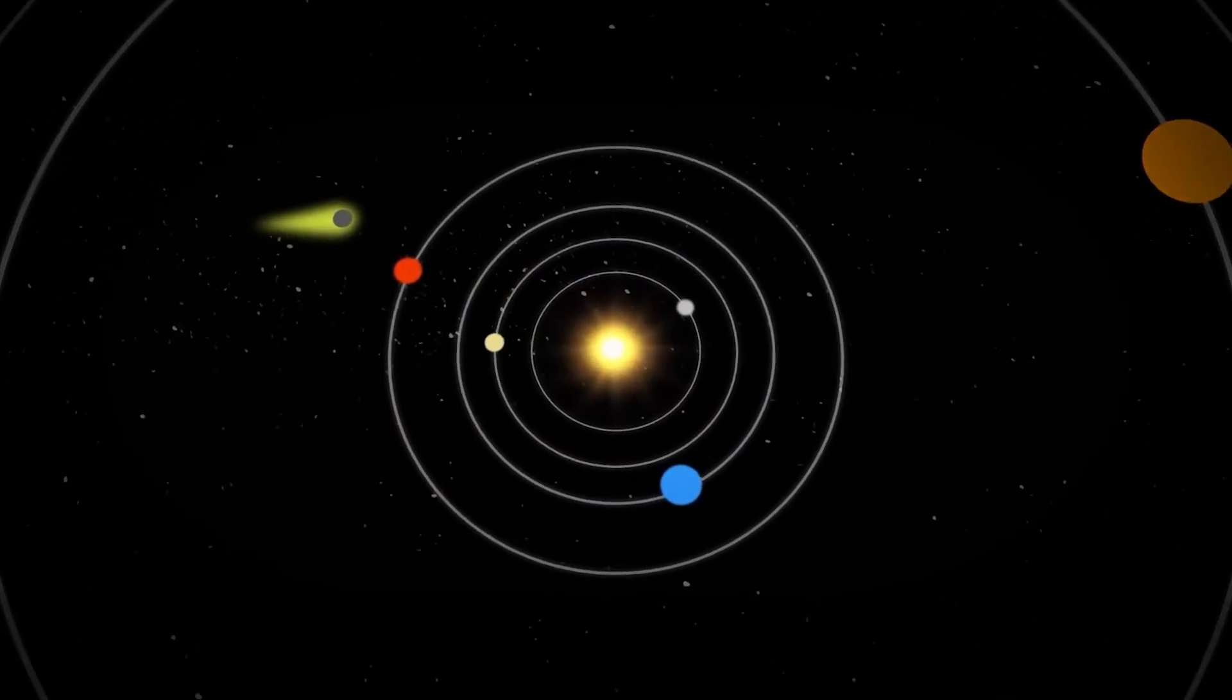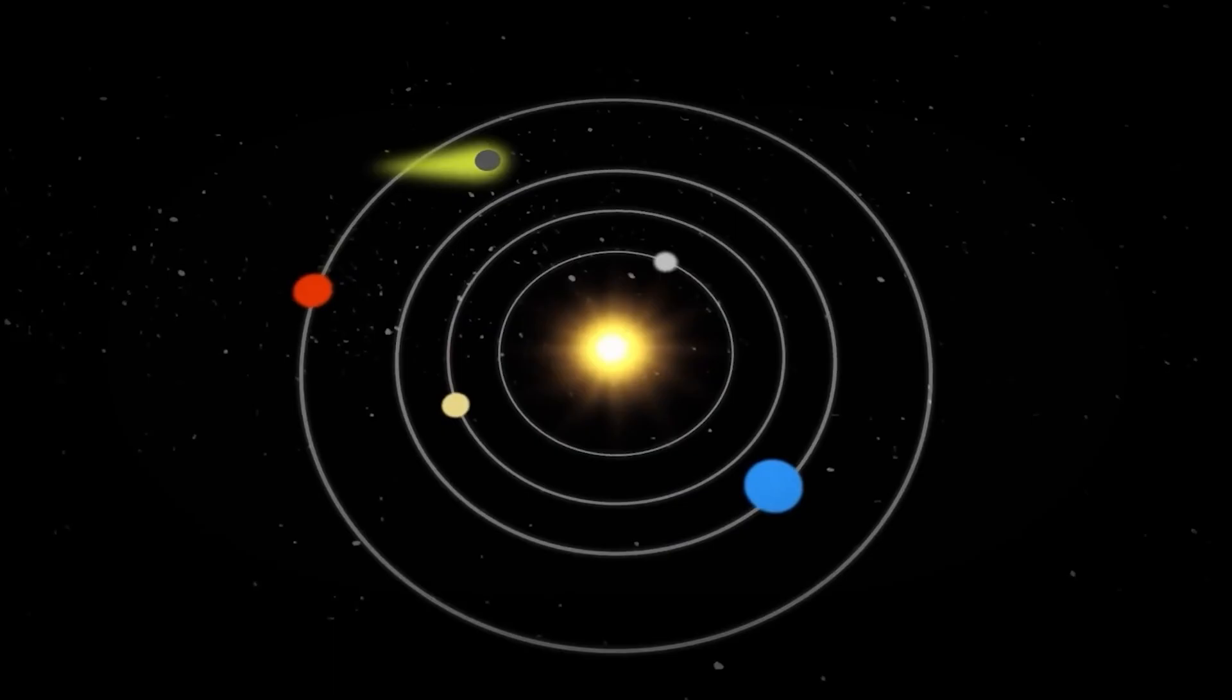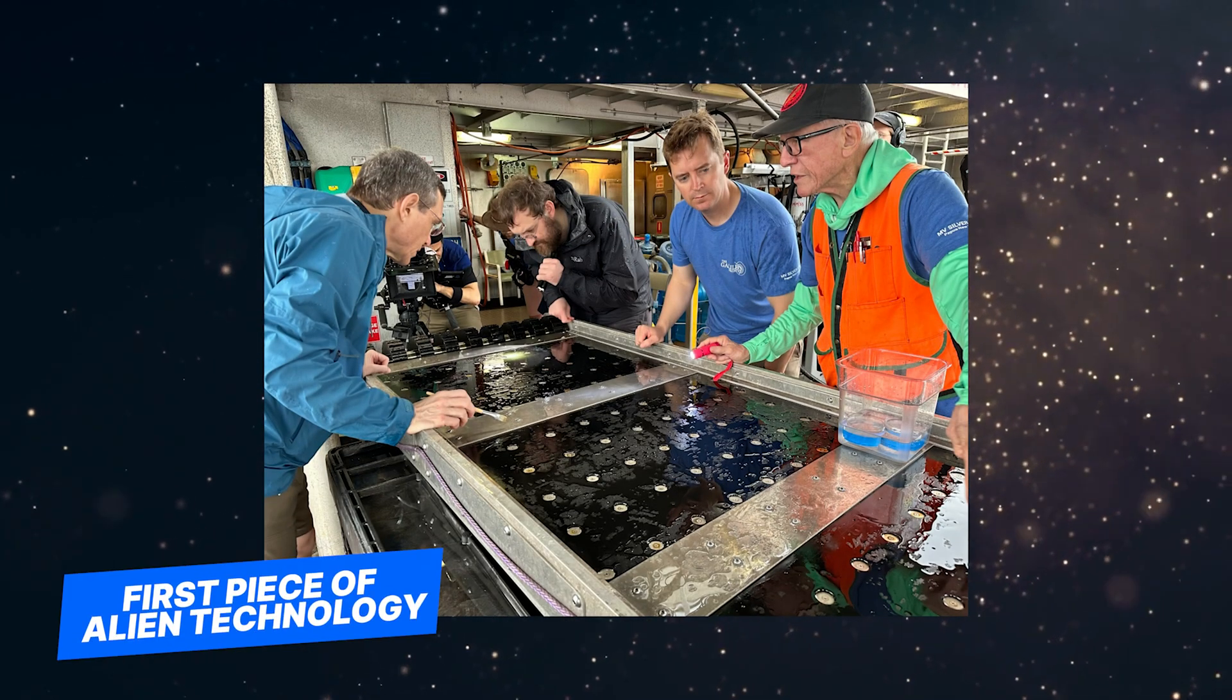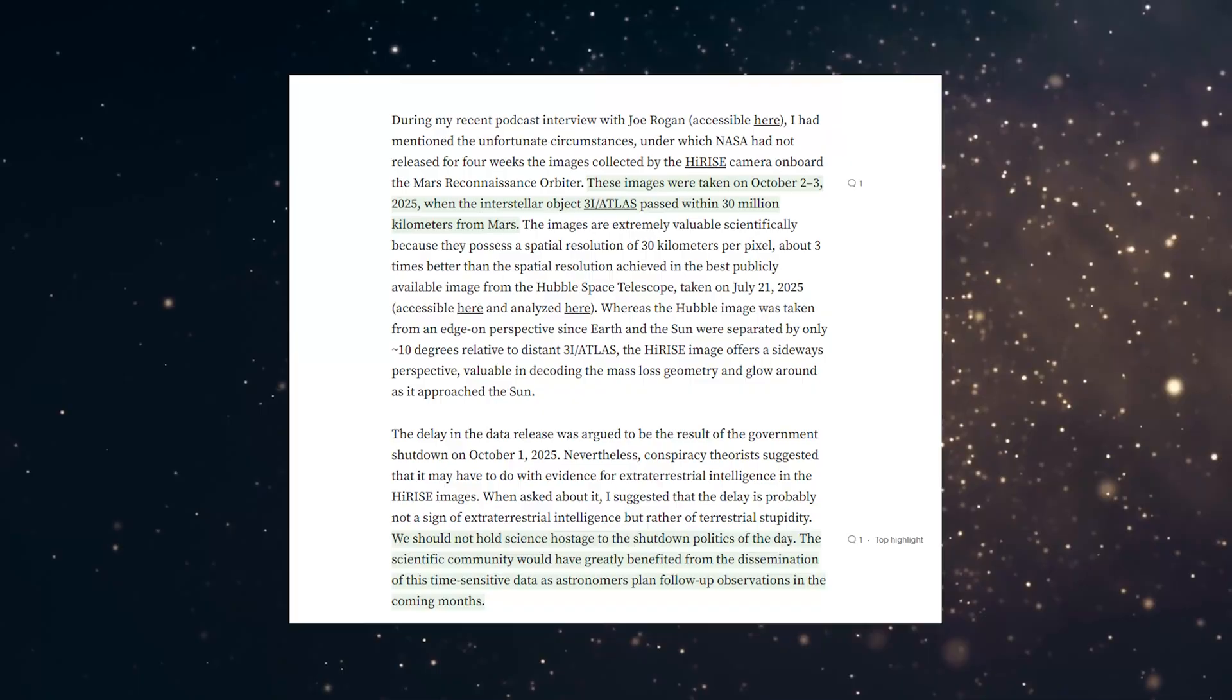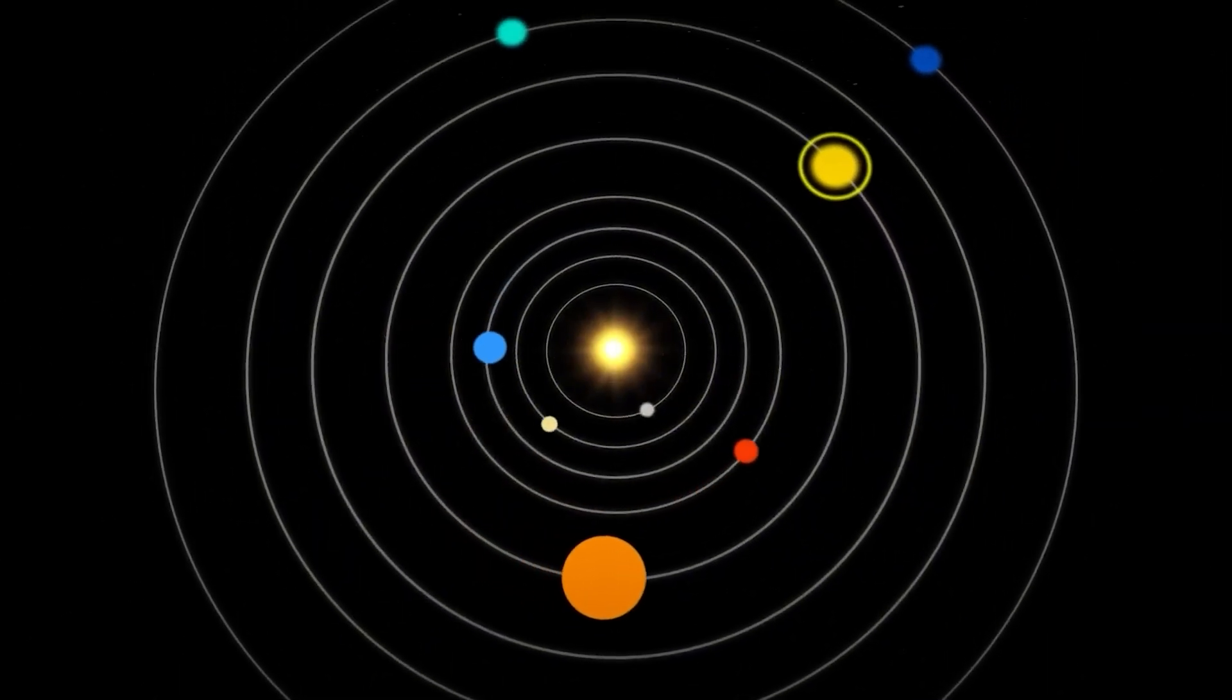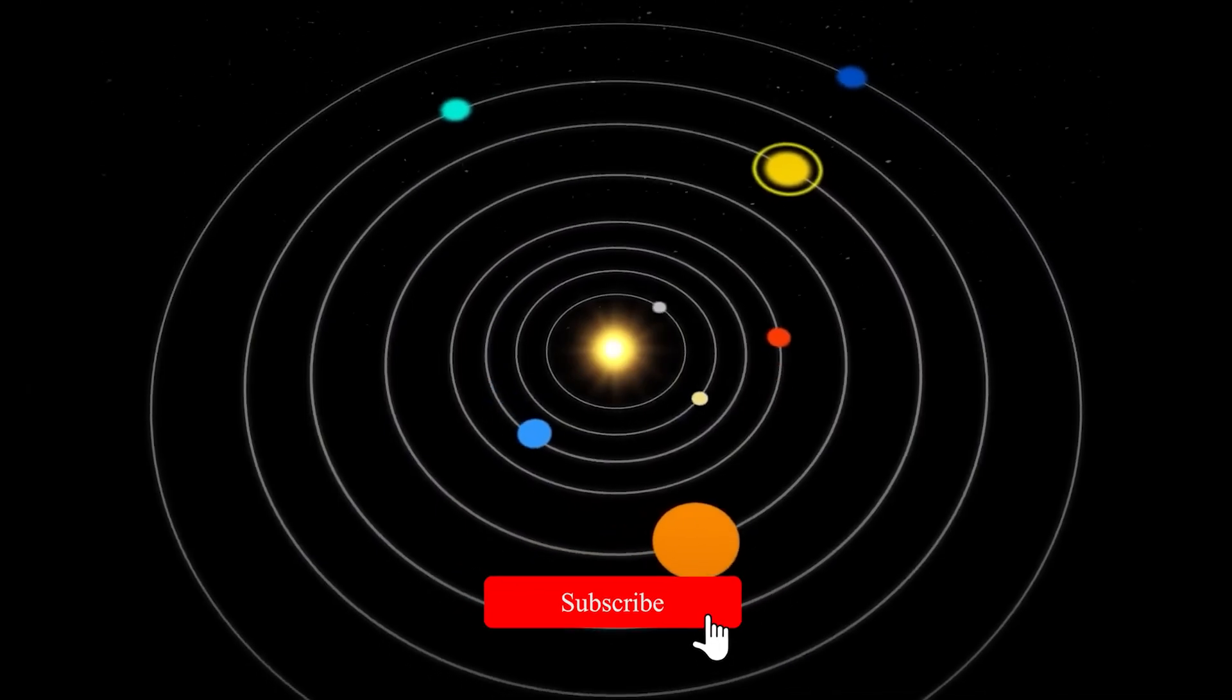In this video, I'm going to walk you through all 12 reasons why one of the world's top astronomers thinks we might have just discovered our first piece of alien technology. Even if one of Loeb's theories is right, everything we thought we knew about our place in the universe is about to change.